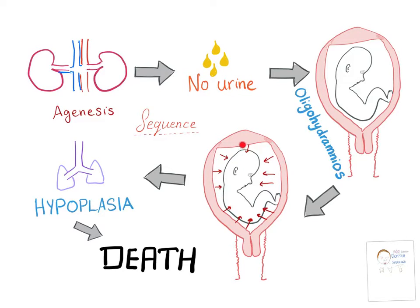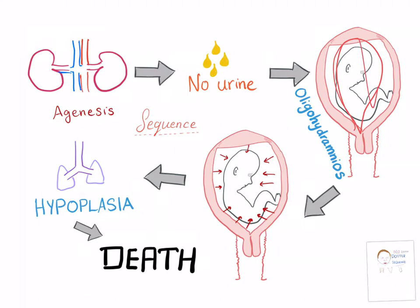This amniotic fluid acts as a cushion — protection for the baby from the pressure of the surrounding uterus. When there is no cushion or protection, there is more pressure on the embryo or fetus. Also, when there is no fluid, the uterus tends to decrease in size or narrow, which creates even more pressure on the baby.